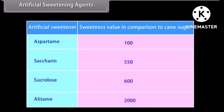Aspartame is 100 times sweeter than cane sugar. Saccharin is 550 times sweeter than cane sugar. Sucralose is 600 times sweeter than cane sugar. Alitame is 2000 times sweeter than cane sugar.